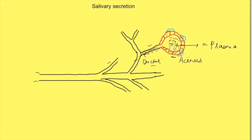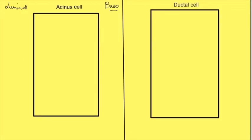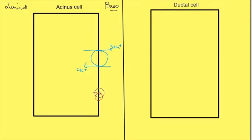We will see how various transporters work to bring about salivary secretion. The sodium-potassium ATPase, as a rule of thumb, is always present on the basolateral membrane. It throws out 3 sodium ions and brings in 2 potassium ions, creating a concentration gradient for sodium to move inside the cell and driving potassium outside. Because of sodium-potassium ATPase activity, sodium moves into the cell along its concentration gradient and chloride moves along with it, increasing intracellular concentrations of both potassium and chloride.